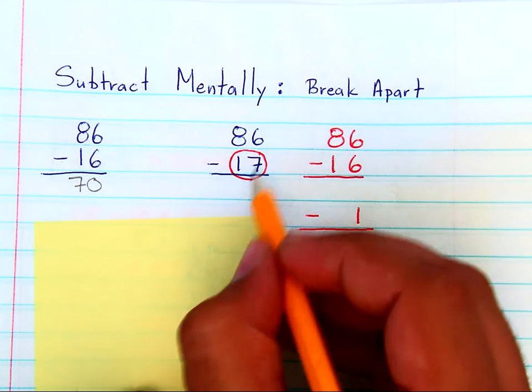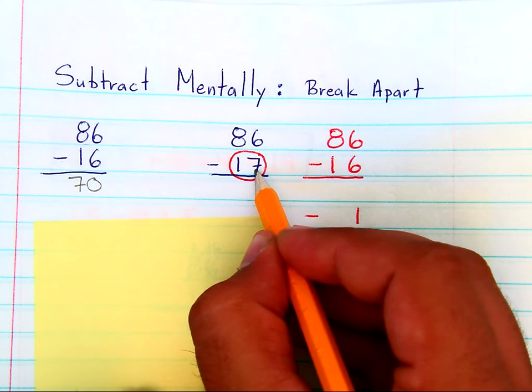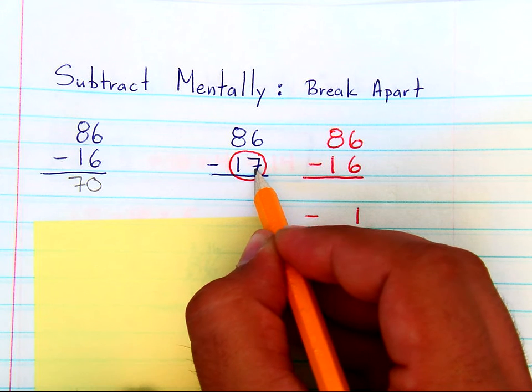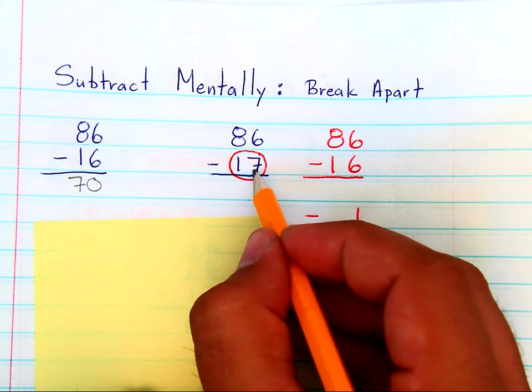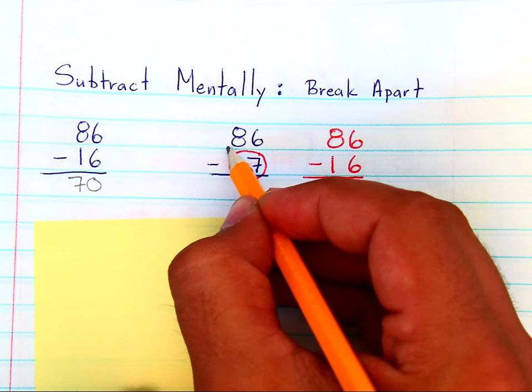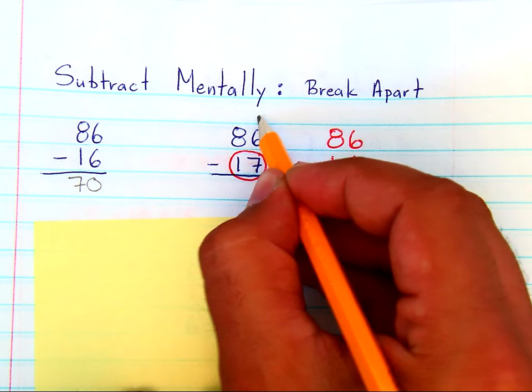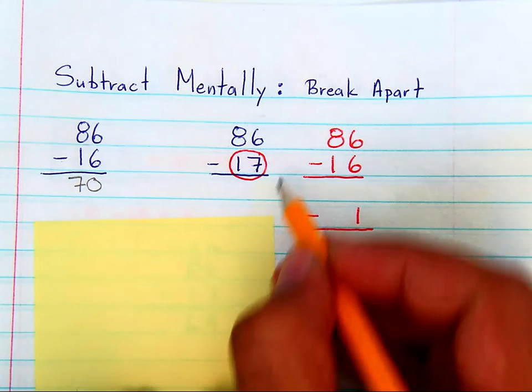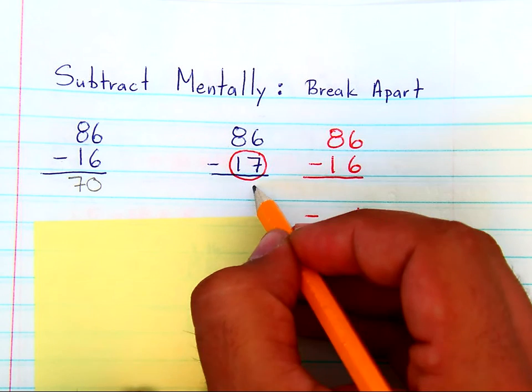But when you get something like 86 minus 17, on paper that would take some time to do in order to borrow from the tens and add it to the ones place, so that you can subtract the ones place.